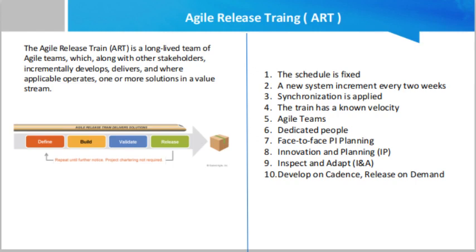Agile teams embrace the Agile Manifesto and SAFe core values and principles, applying Scrum, Extreme Programming, Kanban, and other built-in quality practices. Dedicated people means most people needed by the ART are dedicated full-time to the train regardless of their functional reporting structure. Face-to-face PI planning means the ART plans its work at periodic, mostly face-to-face PI planning events. The Innovation and Planning, or IP, iteration occurs at the end of every PI and provides an estimating guard band buffer as well as dedicated time for PI planning, innovation, continuing education, and infrastructure work.